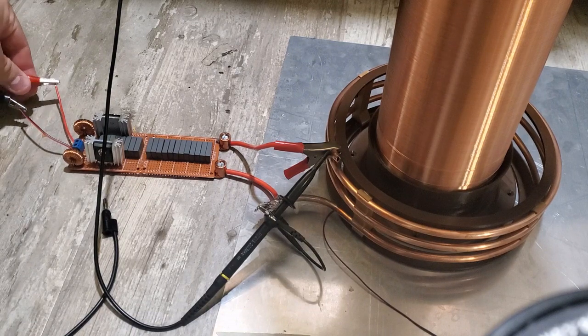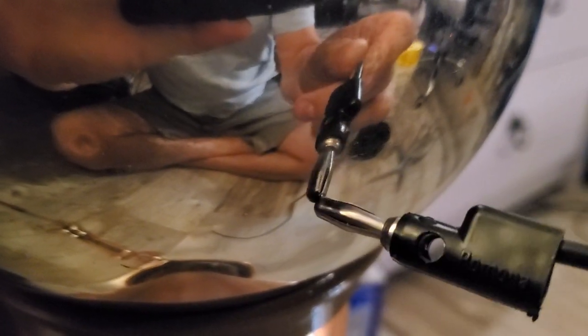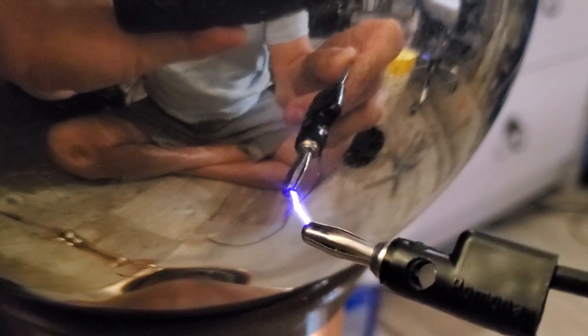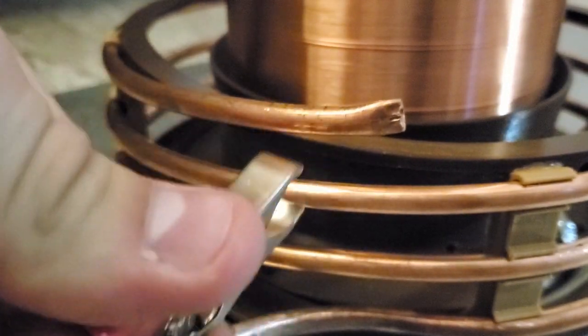I started by running the primary off a ZVS driver, and then sliding a tap to find the resonant frequency. My approach was to measure how far the top load arced, and then keep adjusting the tap until I got the longest possible arc, which should theoretically happen at resonance.